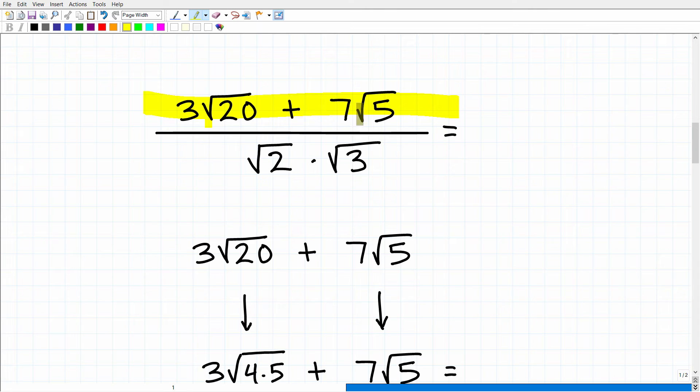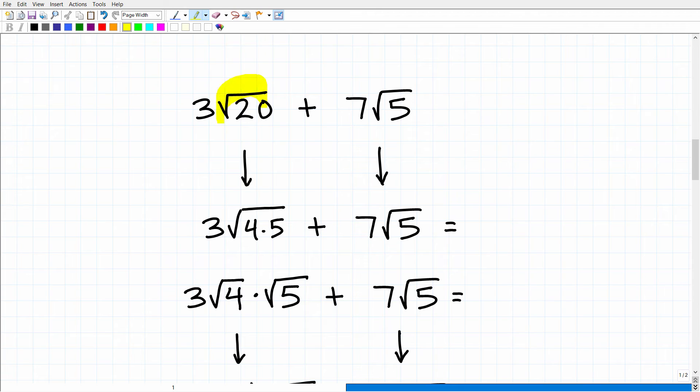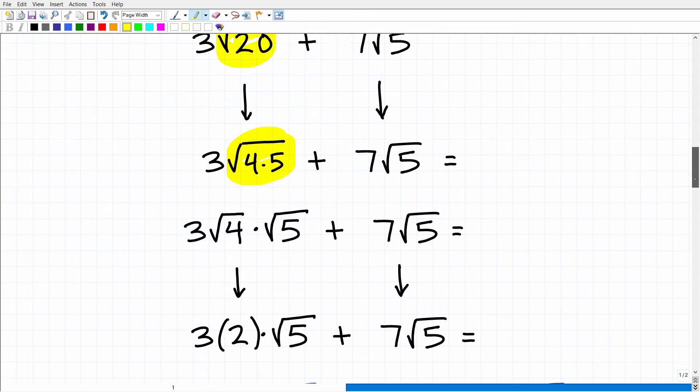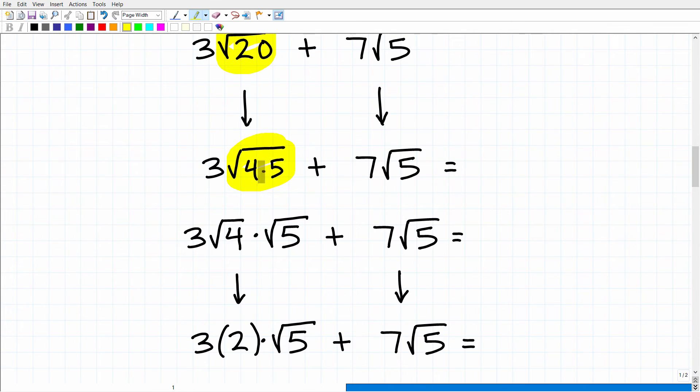So we have 3 square root of 20 plus 7 square root of 5. So we want to see if we can add these two terms in the numerator. And indeed, we can because we can simplify this square root of 20 with the concepts of perfect squares. So we can think of the square root of 20 as the square root of 4 times 5.